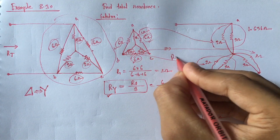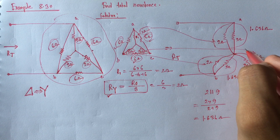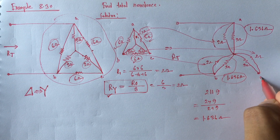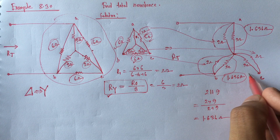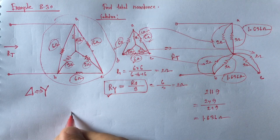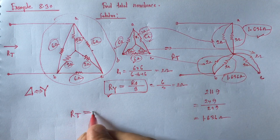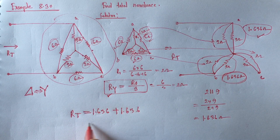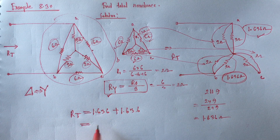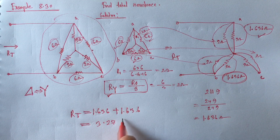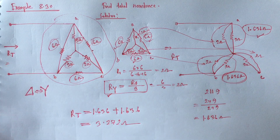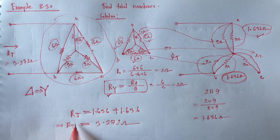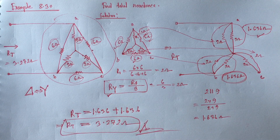Rt for this circuit is a series combination of 1.636 ohm and 1.636 ohm. Point C is excluded from this calculation because it is open. Therefore, Rt equals 1.636 plus 1.636, which is 3.272 ohm. The value of Rt is 3.272 ohm. This is the answer. Thanks for watching.